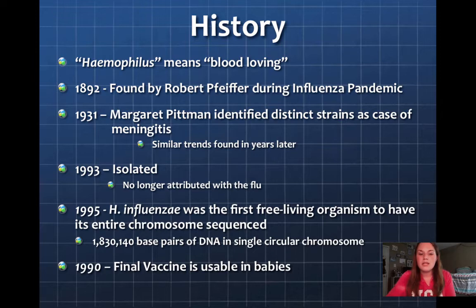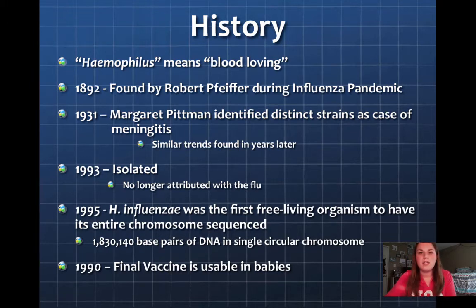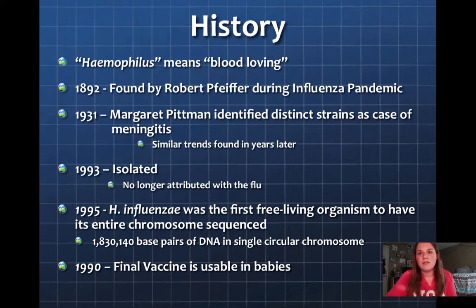In 1990, the final vaccine was released and used for infants and younger children. In 1885 and 1887, there were two other vaccines released, but they were not able to be used on small infants, which is the main target group that they needed to be able to vaccinate.